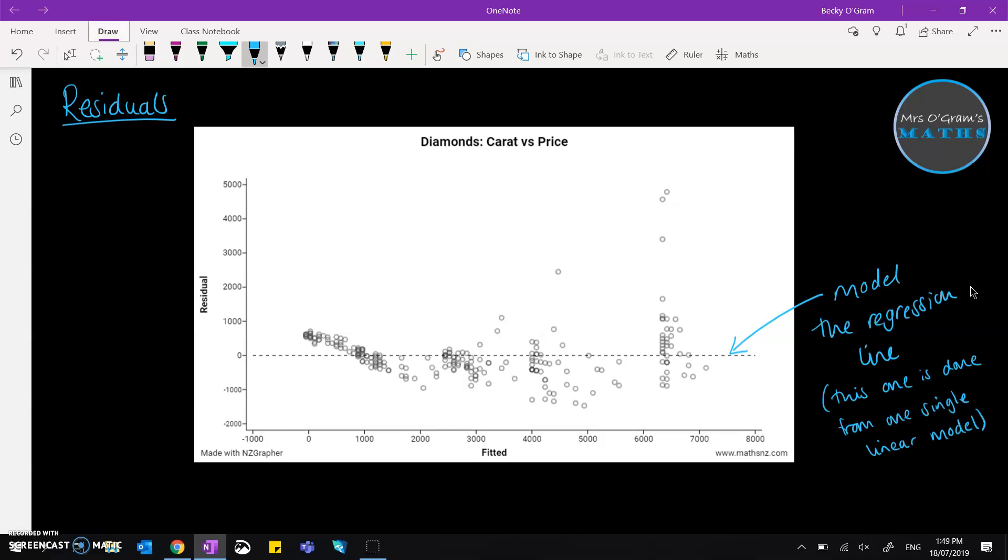In this case it's as if we had applied just one linear line of best fit, the regression line, over all of our data. We haven't split it up into the separate sections like you've seen in the previous videos. This is just to show you residuals across the whole set of the data.